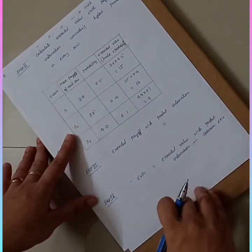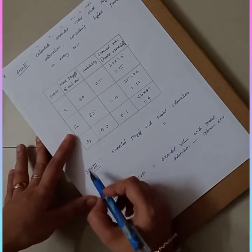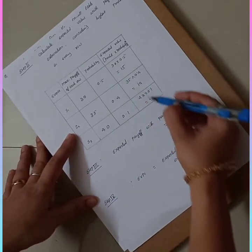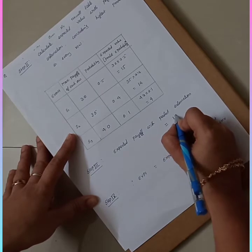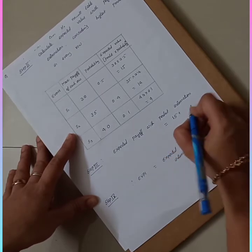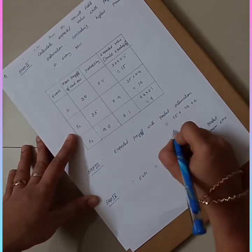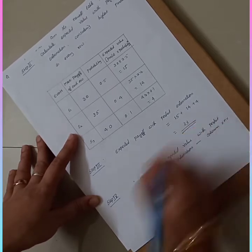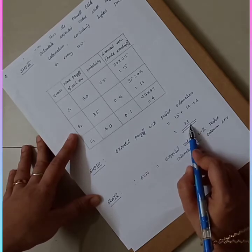Now we calculate the Expected Payoff with Perfect Information — that is step three. We sum all these values: 15 + 14 + 4 = 33. So the Expected Payoff with Perfect Information is 33.